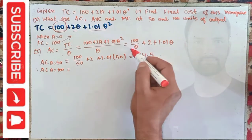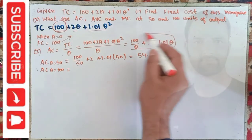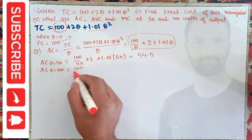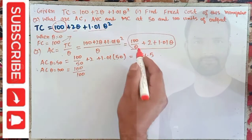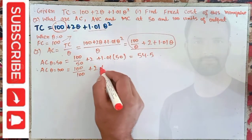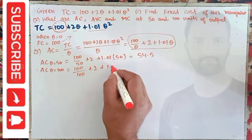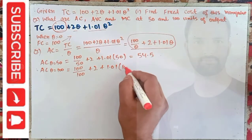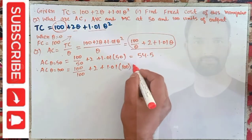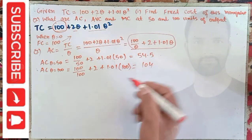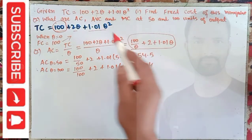Similarly, average cost when Q = 100: plug Q = 100 into the average cost function. We have 100/100 + 2 + 1.01 × 100, and when solved this comes out to be 104.